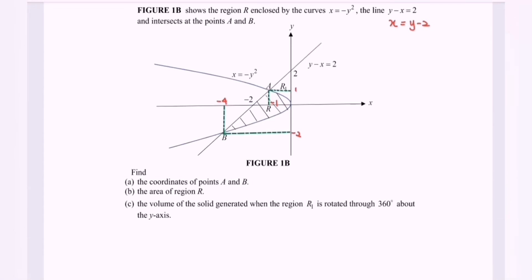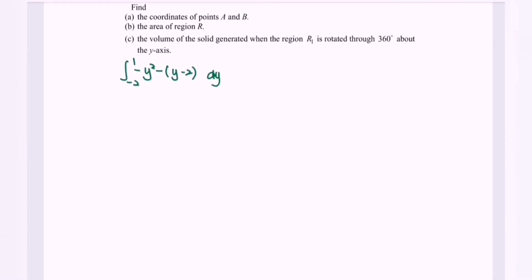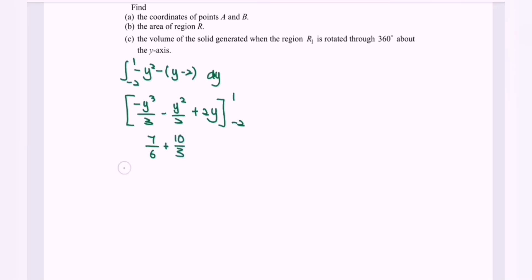For part B, find the area of region R by integrating with respect to y. Integrate (-y² - (y-2)) from -2 to 1. This gives [-y³/3 - y²/2 + 2y] from -2 to 1. Substituting 1 gives 7/6; substituting -2 gives -10/3. The area equals 9/2 square units.